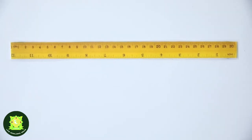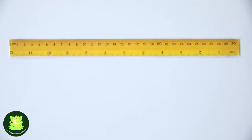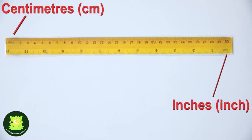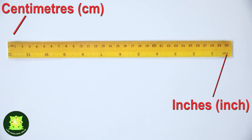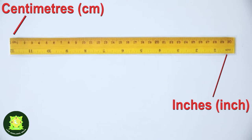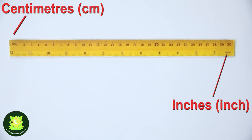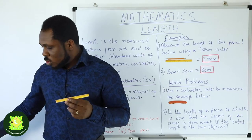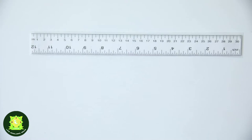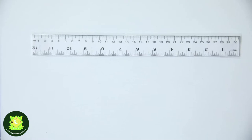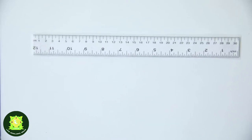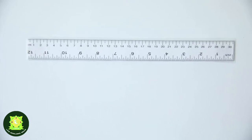This is what it looks like — you can see the ruler. It has measurements in inches and also in centimeters, but we are going to be using centimeters. Some rulers come in white color, some come in brown color, but it's a 30 centimeter ruler.